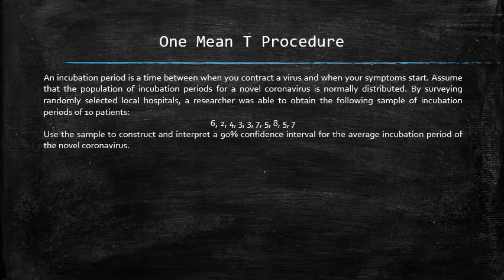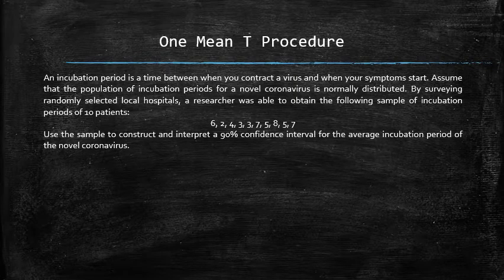Consider the following example. An incubation period is a time between when you contract a virus and when your symptoms start. Assume that the population of incubation periods for a novel coronavirus is normally distributed. By surveying randomly selected local hospitals, a researcher was able to obtain the following sample of incubation periods of 10 patients: 6, 2, 4, 3, 3, 7, 5, 8, 5, 7.